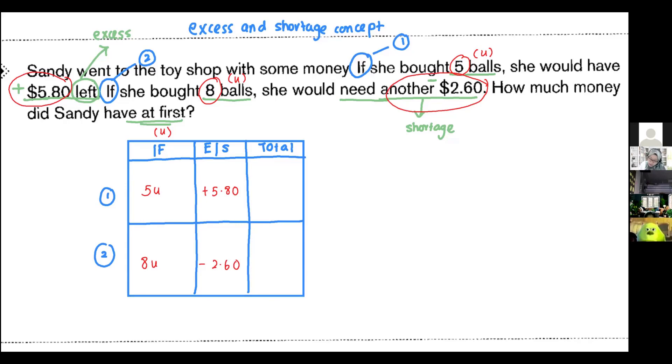How do I get my total? Easy. Just look row-wise. Row number one, just copy down: five units plus $5.80. Row number two: eight units minus $2.60.